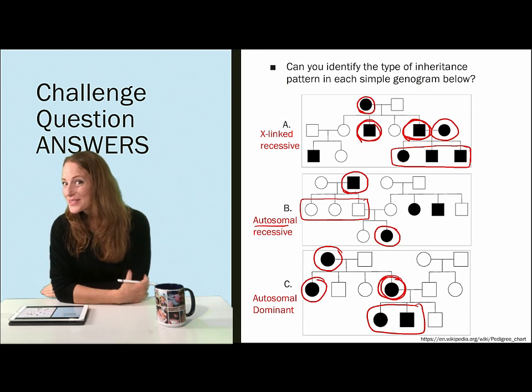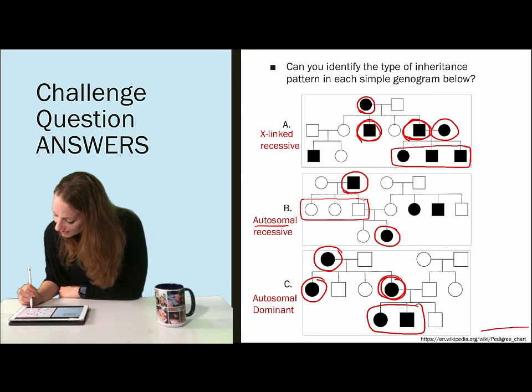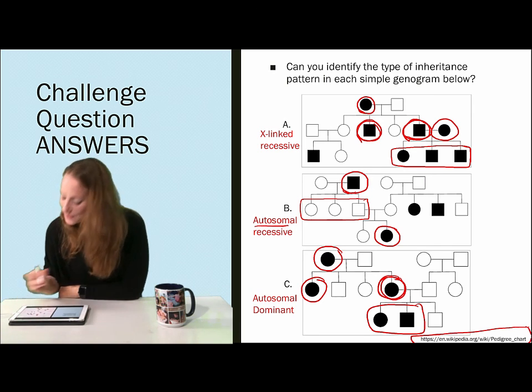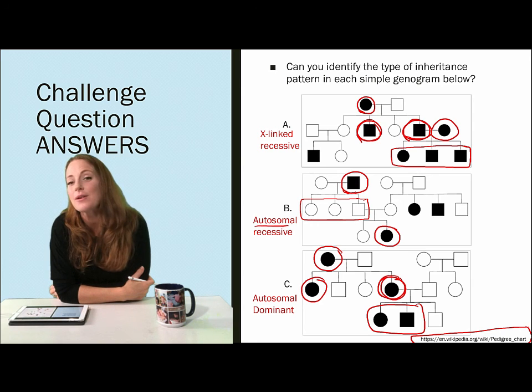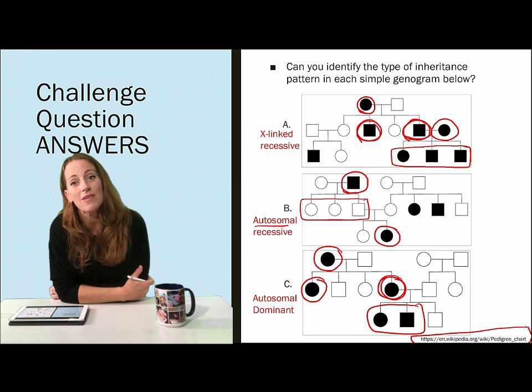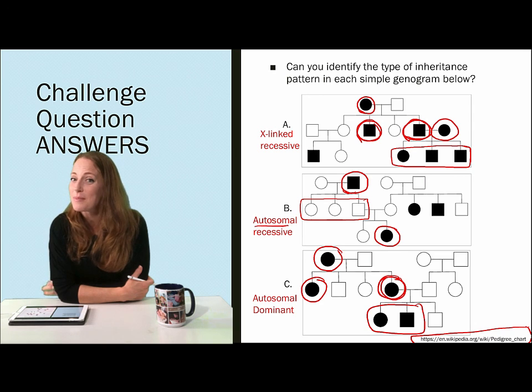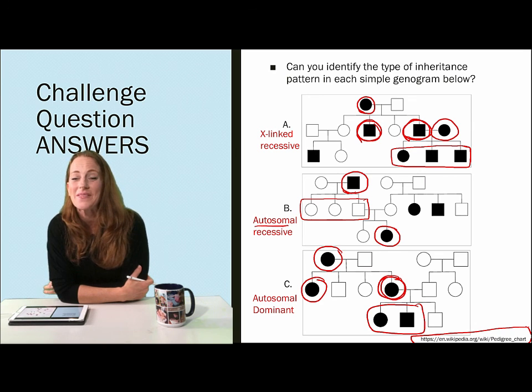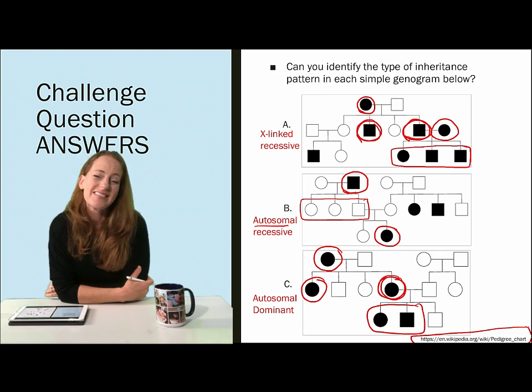Okay. I know these are tricky. Actually these come from Wikipedia which has a site on pedigree charts with more examples and explained examples for you if you want to practice some more. These inheritance patterns are really important so practice, practice. Let me know if you have any other questions. See you soon.